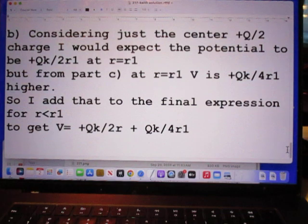Now, he does B. Considering just the center plus Q over 2 charge, I would expect the potential to be QK divided by 2R1 at R equals R1. But from part C, at R equals R1, the potential is QK divided by 4R1 higher. So, I added that to the final expression for R smaller than R1 to get the value that you see here.